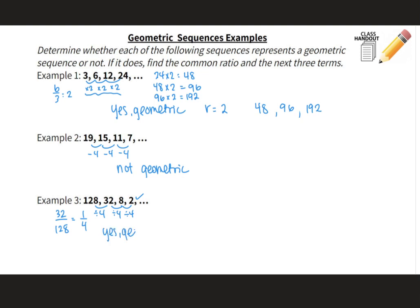So yes, it's geometric. The common ratio is 1/4. To get the next three terms: 2 times 1/4 is 1/2, then 1/2 times 1/4 is 1/8, then 1/8 times 1/4 is 1/32. For the fractions, you're taking the denominator and multiplying it by 4. It's also correct to write these as decimals: 1/2 = 0.5, 1/8 = 0.125, and 1/32 = 0.03125.